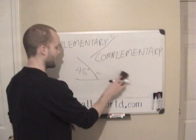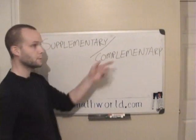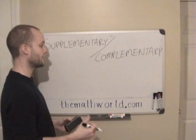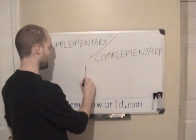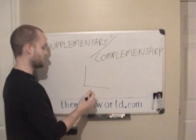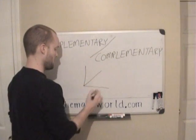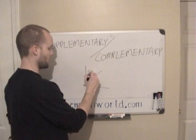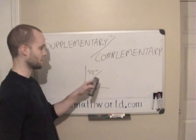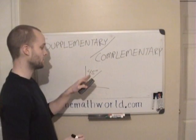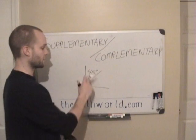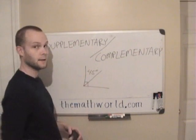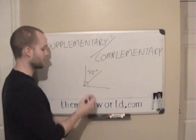The next one we're going to look at is complementary angles. Complementary angles are going to add up to 90 degrees. So if you're given a right triangle and they say this angle is 45 degrees, find the complementary angle — what they're asking is: what other angle added to this equals 90 degrees?